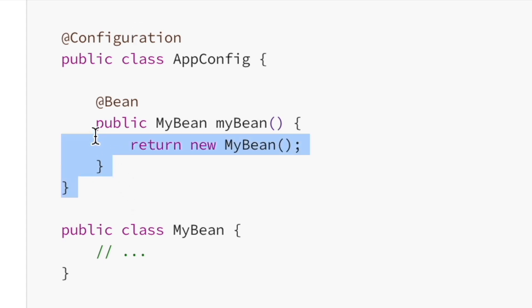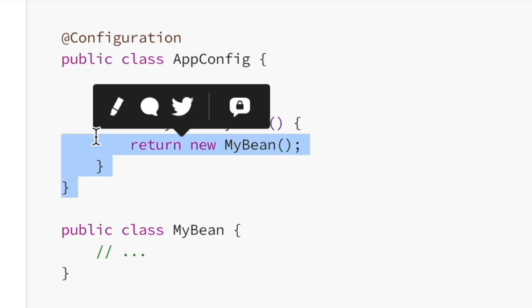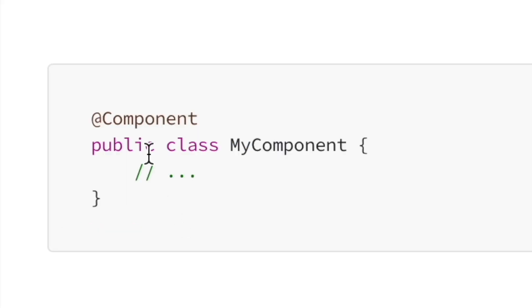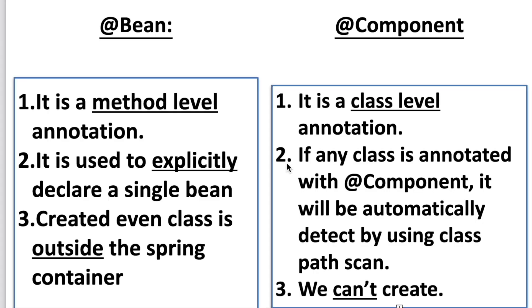You can see Bean here — this is a method level annotation — and Component annotation goes along with the class. This is about the differences between Bean and Component annotation.